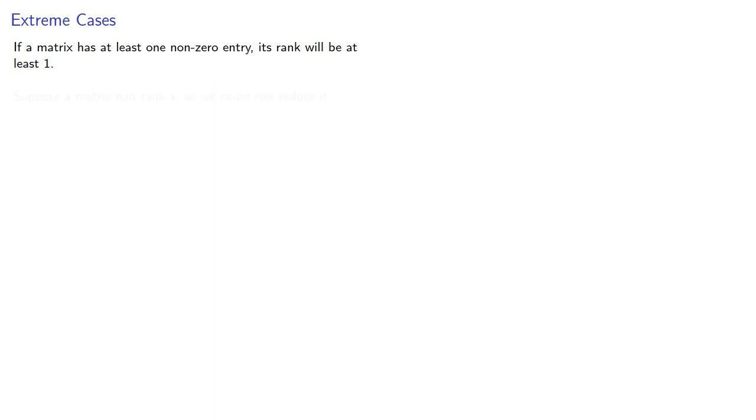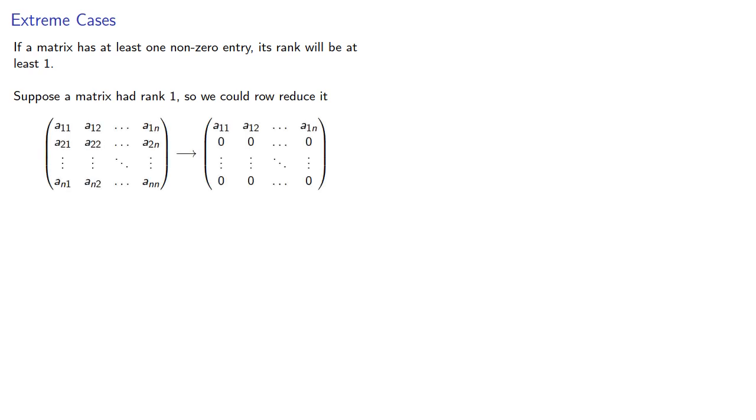So now suppose a matrix does have rank 1. So we could then row reduce it to a single row of non-zero entries, and then everything else is 0.